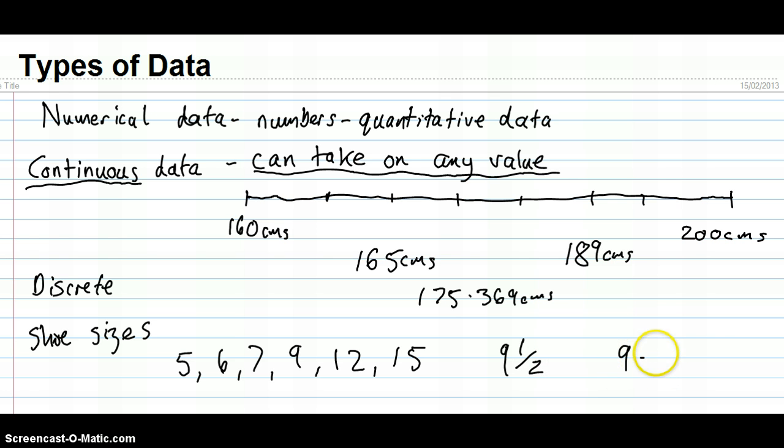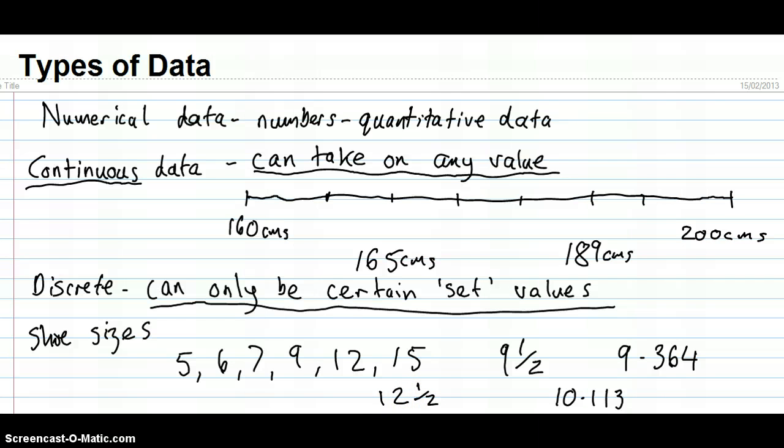But I can't have a shoe size of nine point three six four. Okay I can't have a shoe size of ten point one one three. I can only have certain shoe sizes, even if some of them are half, twelve and a half, thirteen and a half. They can only take on certain discrete values. Okay so just to highlight, numerical data comes in continuous or discrete. Continuous data can take on any value in a range, discrete data can only be certain set values in a range.